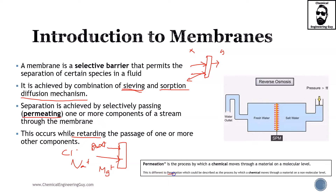If you have been studying mass transfer, you know that penetration is also an important factor. Let's define the difference: permeation is the process by which a chemical species moves through a material on the molecular level, which is different from penetration, which is the process by which a chemical species moves through a material on a non-molecular level. One is at the molecular level and the other is at the non-molecular level.